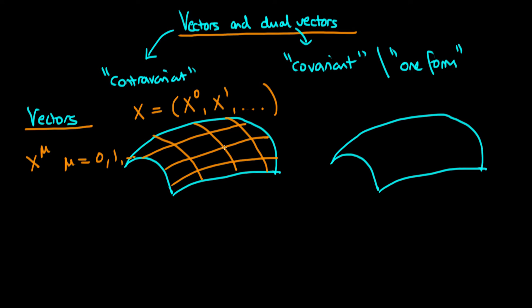We're going to imagine that at a particular point on this surface there is a particle, and that particle has a velocity. That velocity we can represent as a vector. The components of that velocity vector we can write as v^μ, equal to the derivative of that particular coordinate with respect to time. On our graph, we can find the various components of that vector along the coordinate axes.